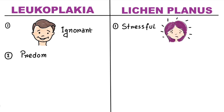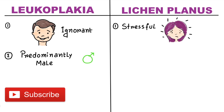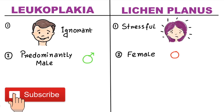Leukoplakia predominantly occurs in males, which is because of tobacco and smoking habits, which are more common in the male group in comparison to females. However, Lichen Planus mostly occurs in female patients.